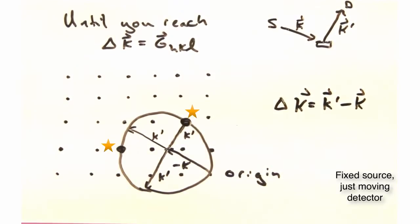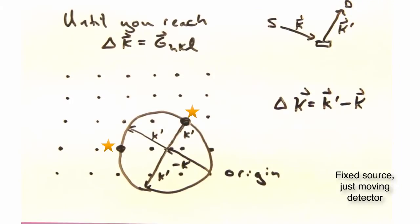But Eric, we only hit two reciprocal lattice points after moving the detector a considerable amount. Seems like we're not actually measuring much of the reciprocal space with our detector.